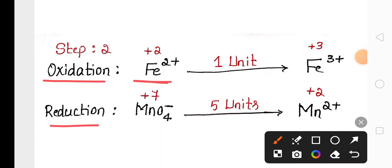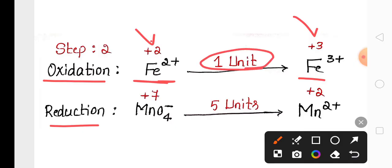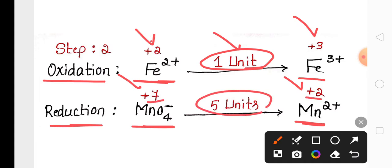In the next step, we write the oxidation reaction and reduction reaction separately. For the oxidation reaction, based on oxidation number, the difference between +2 and +3 is 1 unit. For the reduction reaction written separately, the difference between +7 and +2 is 5 units.